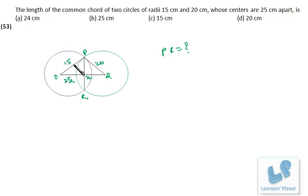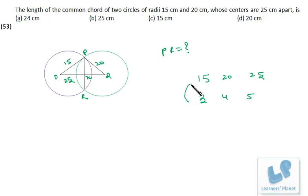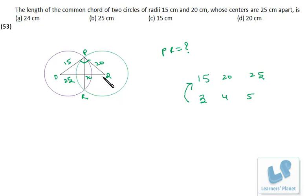Notice that 15, 20, and 25 — if divided by 5 — give 3, 4, and 5, which is a Pythagorean triplet. Therefore 15, 20, 25 are also a Pythagorean triplet. This means triangle O, P, Q is a right-angle triangle, right-angled at P, with the largest side 25 as the hypotenuse.